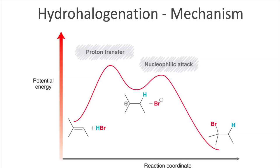Let's take a look at the energy diagram for the reaction. It was a two-step process, so there are two humps in this pathway. The first step is the proton transfer step, resulting in the carbocation intermediate — carbocations are highly unstable, making this quite an elevated intermediate. The second step is a nucleophilic attack, bringing us down to a more stable product. It turns out the first step is the rate-limiting step, as it has the highest activation energy.